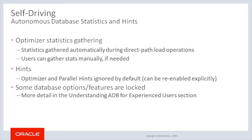Because Autonomous Database and the Exadata platform it runs on are so efficient at running the Oracle database, by default, optimizer and parallel hints are ignored. Parallelism is generally determined by what is defined in the autonomous database. Users have the ability to explicitly re-enable hint processing if it is required for specific reasons.